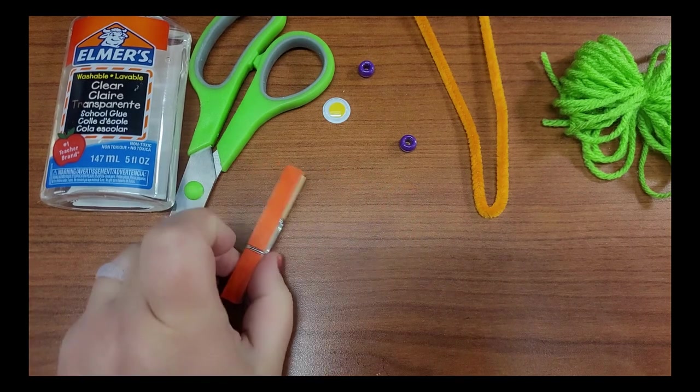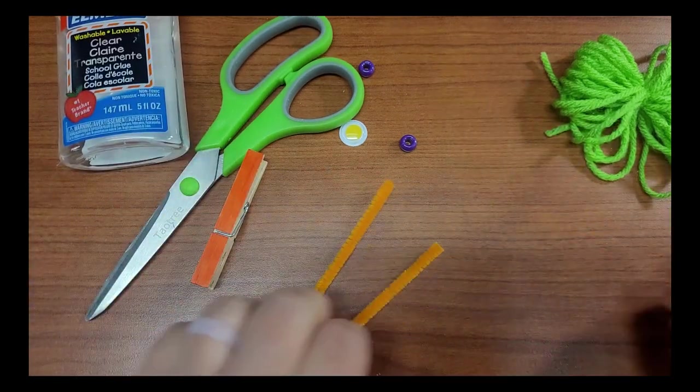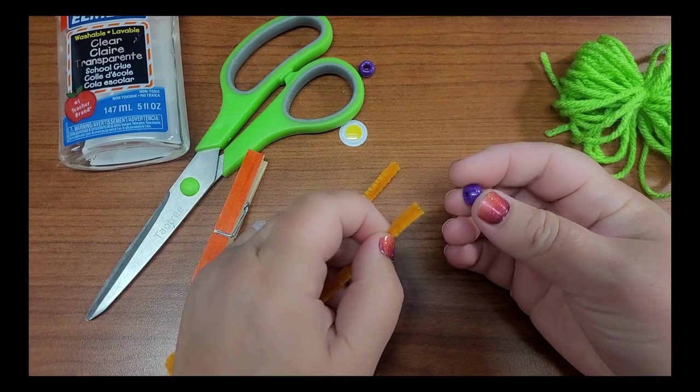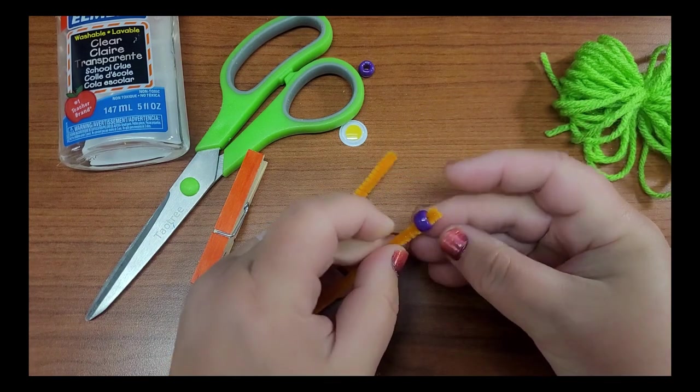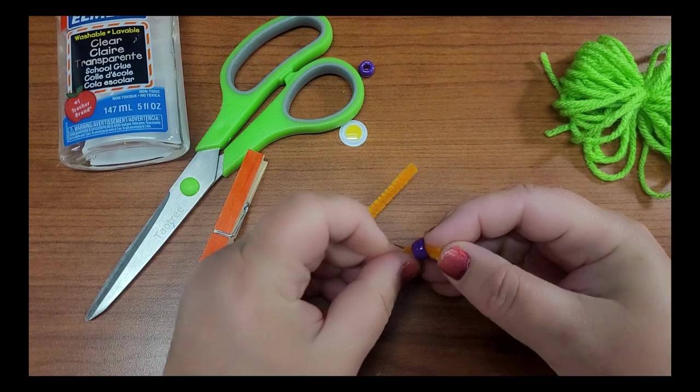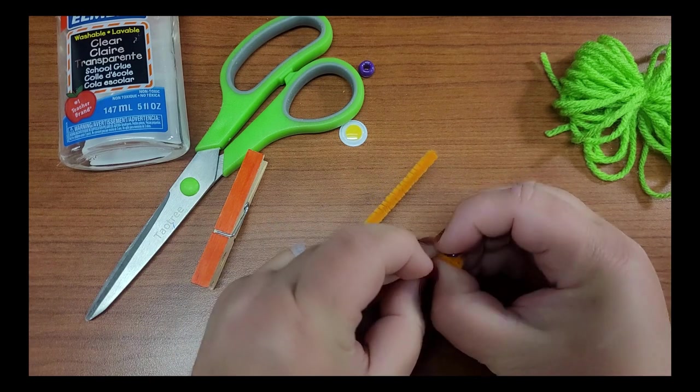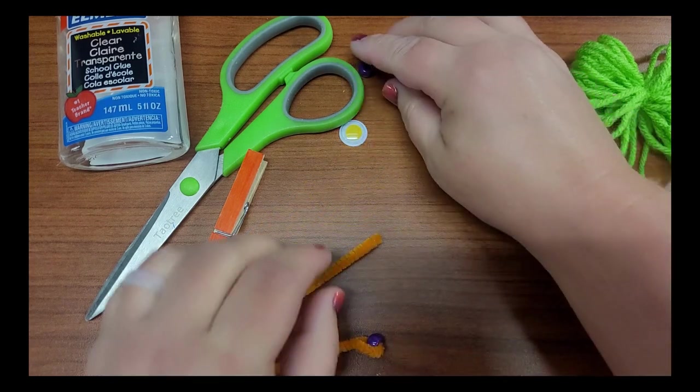Next, I'm going to make my monster's arms and hands. So I'm going to put the pony bead on the end of one side of my pipe cleaner and then kind of bend it over so it stays on and it doesn't fall off.